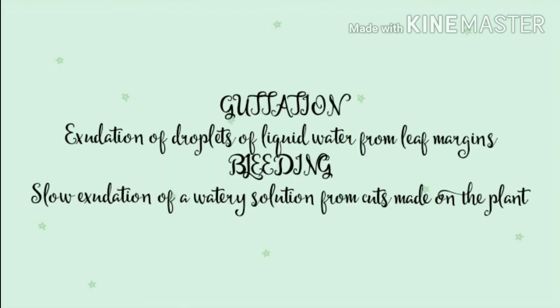The two evidences that support the root pressure theory are guttation and bleeding. Guttation is the exudation of droplets of liquid water from leaf margins, while bleeding is the slow exudation of watery solution from the cuts made on the plant body.